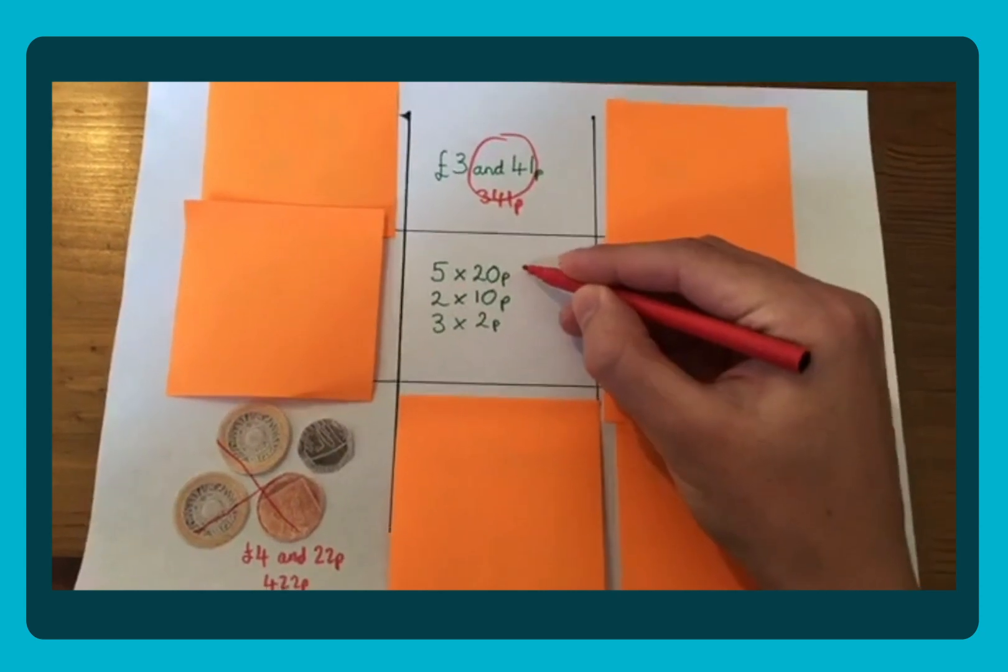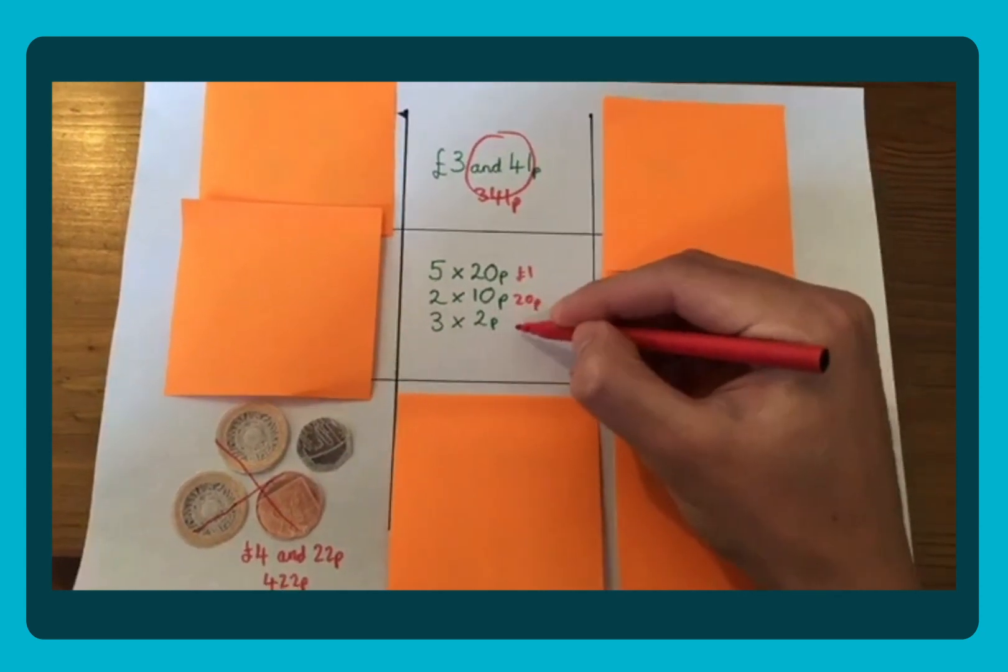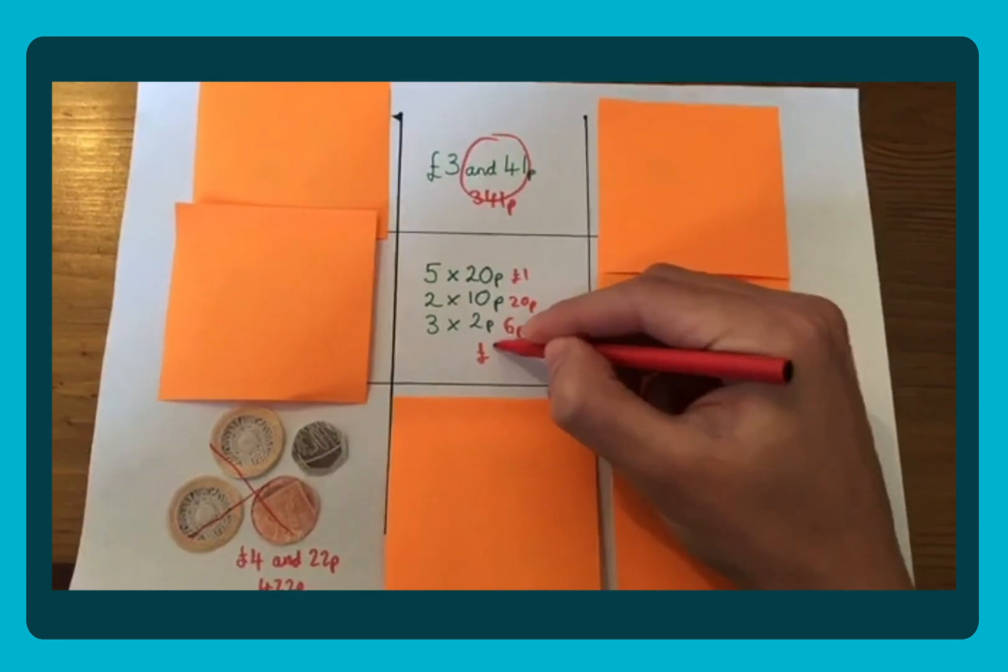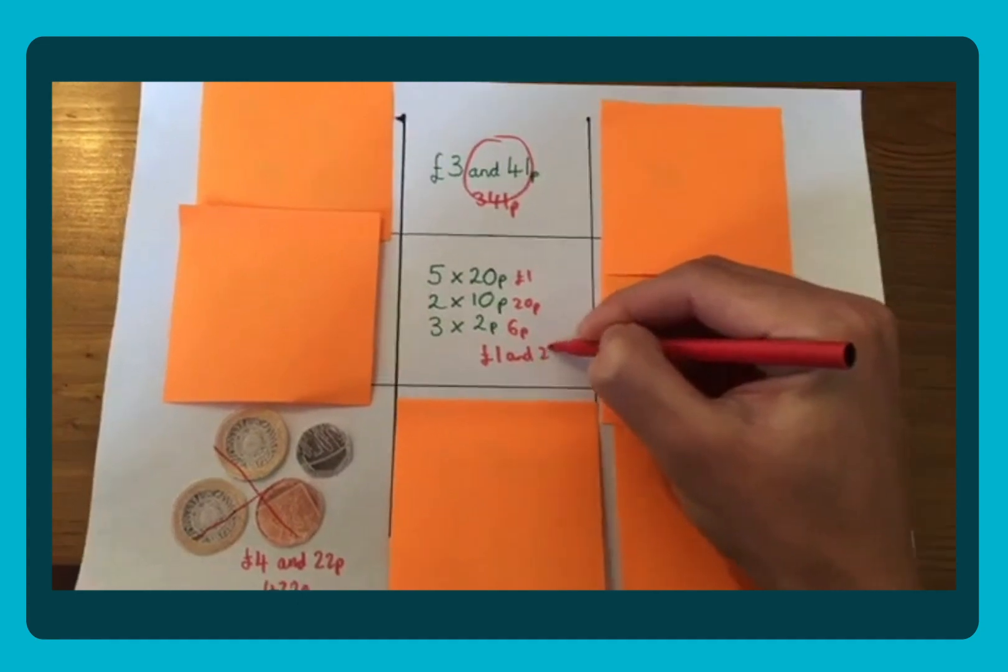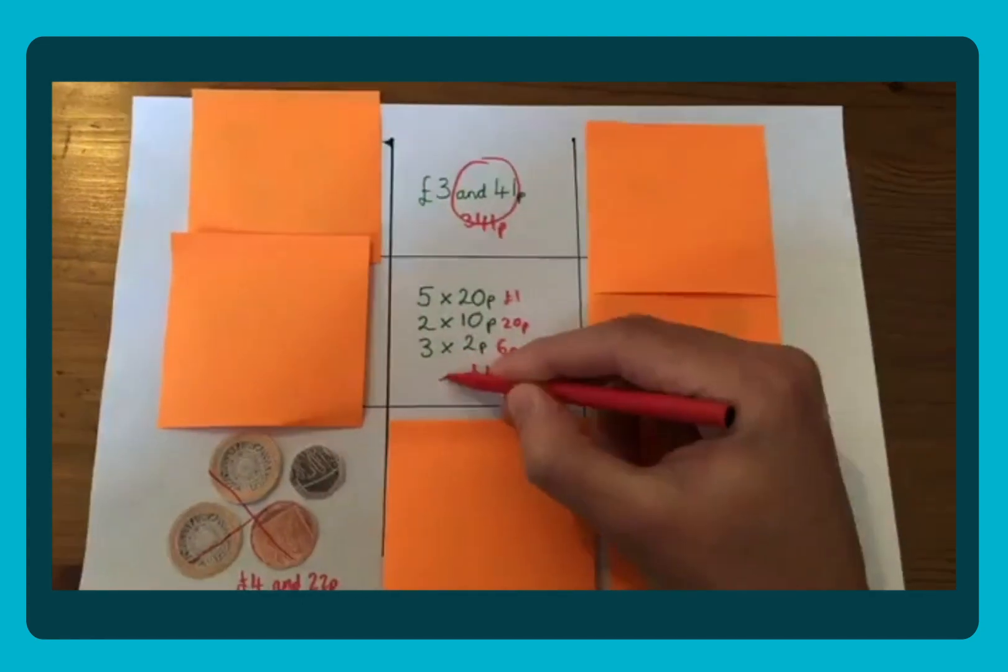5 twenty pences is a pound. Then we've got 2 ten pences. That's 8, and 3 two pences is 6 pence. So you've got 1 pound and 26 pence, and you can show that as pence as well. So they'd gain that one.